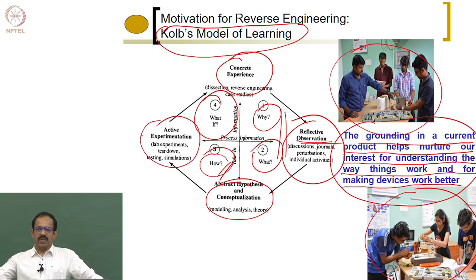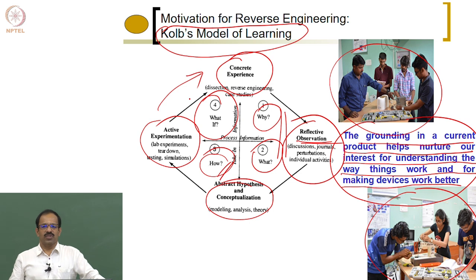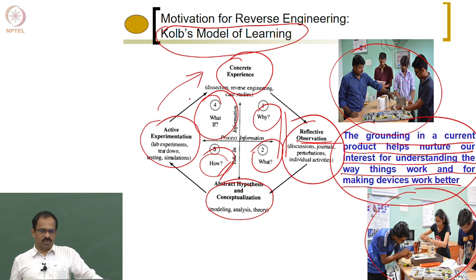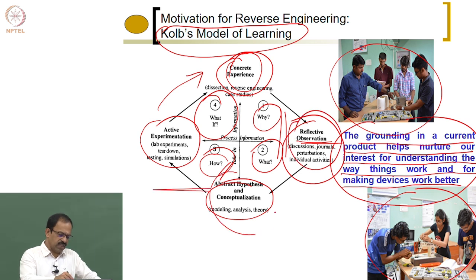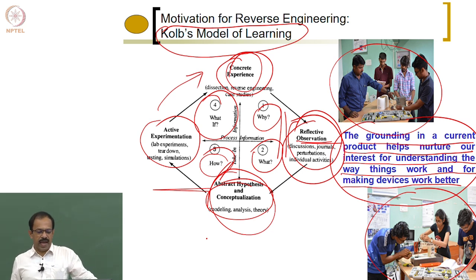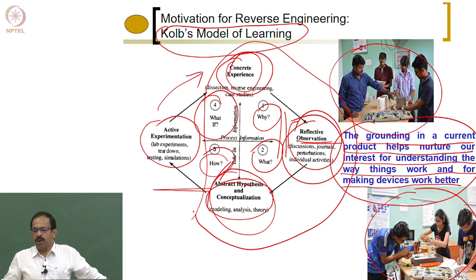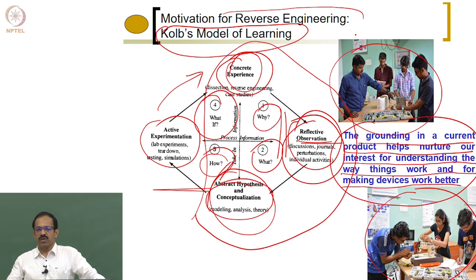You start experimenting with new designs or concepts and get the experience — that completes the cycle of the reverse engineering and redesign process. During the lab you are expected to do concrete experience, reflective observation, and to some extent conceptualization on how to improve the product, so that you can be a good designer or think of redesigning the product.